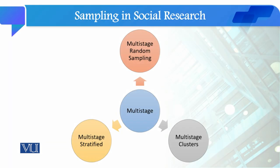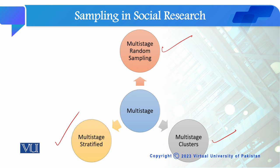Multi-stage sampling ki tien types banti hain: multi-stage random sampling, multi-stage cluster sampling, and multi-stage stratified sampling. Jab hum random sampling ko phases mein kar rahe hain toh us ko multi-stage random sampling kehte hain, aur multi-stage random sampling ko systematic sampling bhi kaha jata hai. Multi-stage cluster sampling mein jab hum cluster sampling ko phases mein karte hain toh hum us ko multi-stage cluster sampling kehte hain.